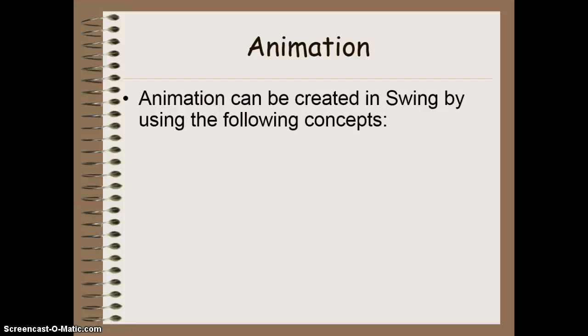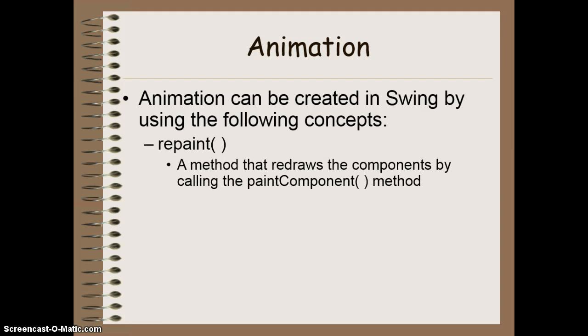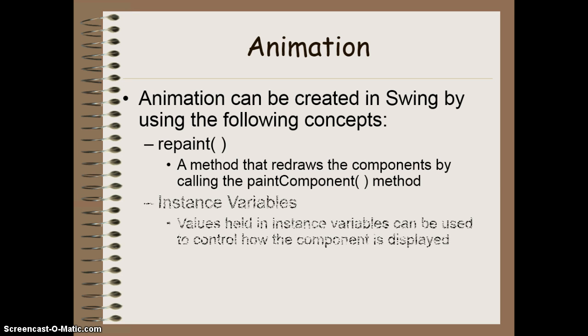We can create animation in Swing by using three concepts in the programs that we create. The first is the use of a repaint method. This is a method that redraws components by calling that component's paint component method. We need to make use of the instance variables of the component we're trying to display. The way we do this is by holding values that are used to control the appearance of that particular component. And when we modify those values, we're going to modify how that component appears.